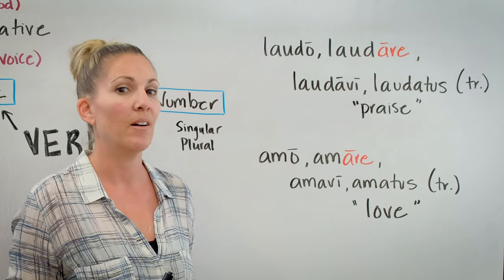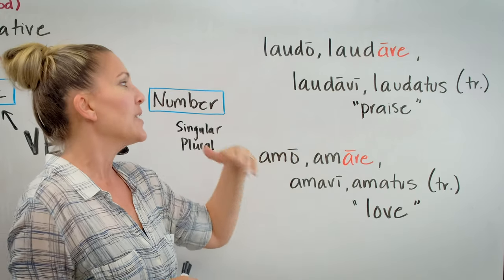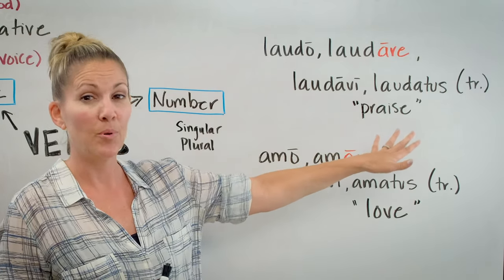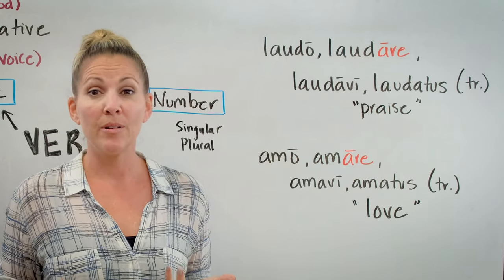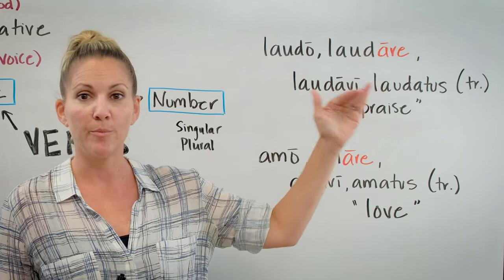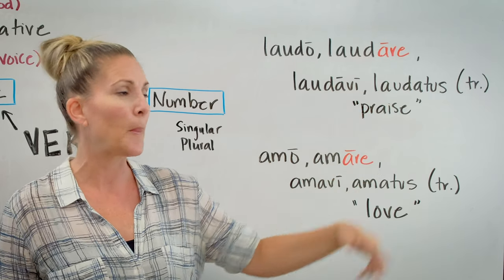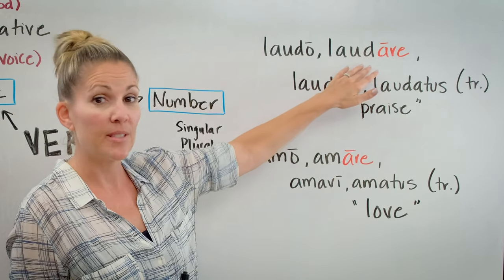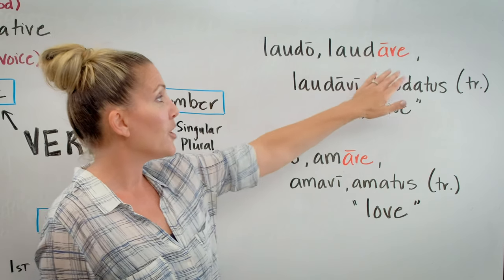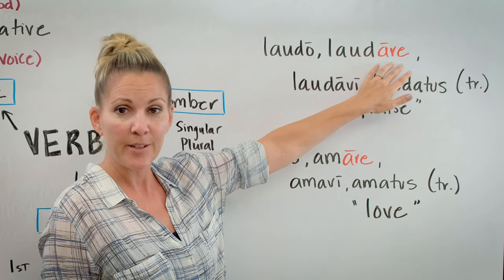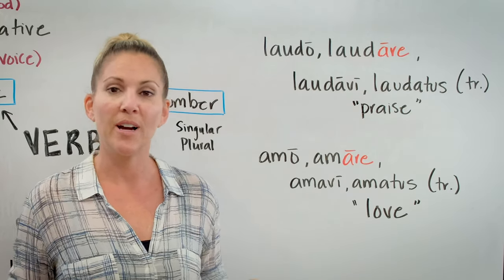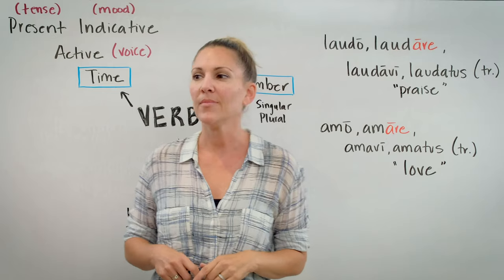It is important to memorize the transitive/intransitive marker along with the other four principal parts. As you commit these things to memory, make sure you're memorizing all four principal parts — it becomes crucial in further lessons. To know a verb belongs to the first conjugation, look at the second principal part, the infinitive. If it ends in -ARE, it belongs to the first conjugation, and it will always have first conjugation endings.